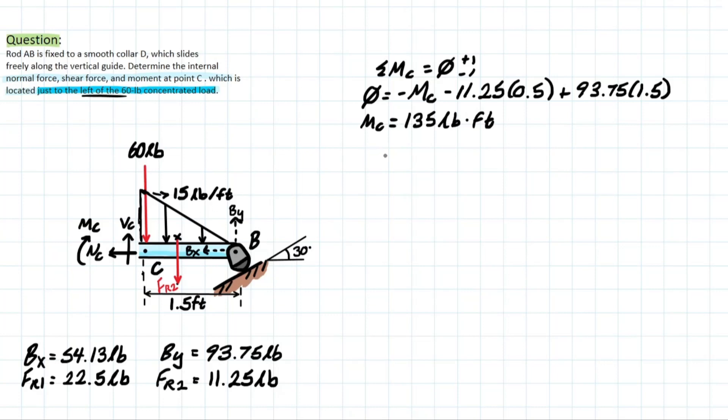Let's move on to another easy one. Let's do FX. We know there's only one X component here. It's going to be that BX. We've already solved for it before. So we have 0 is equal to negative normal at C minus the BX as well, which is 54.13. Therefore, normal at C is going to equal negative 54.13 pounds. So that means it's actually going to be looking something like this rather than the way we drew it in our convention.